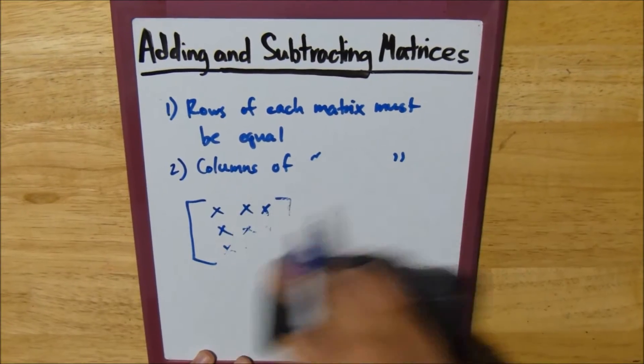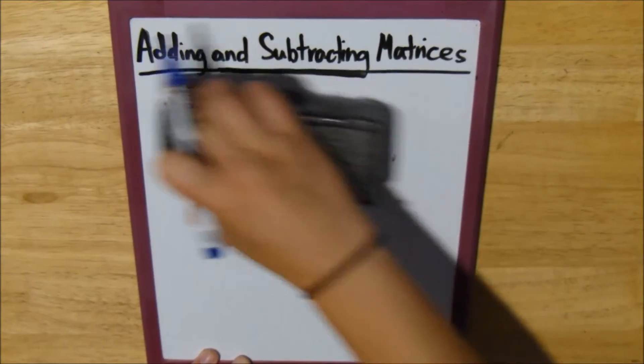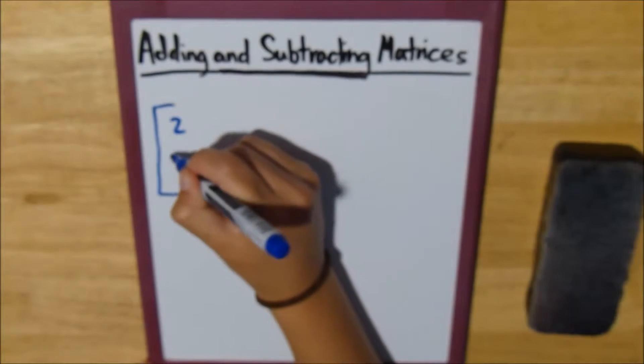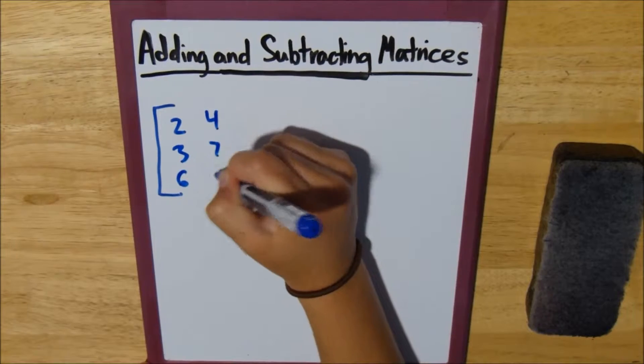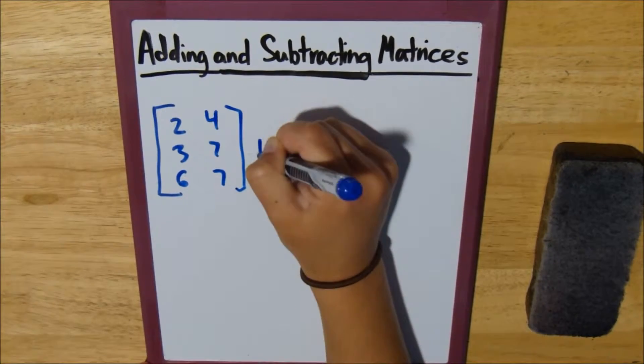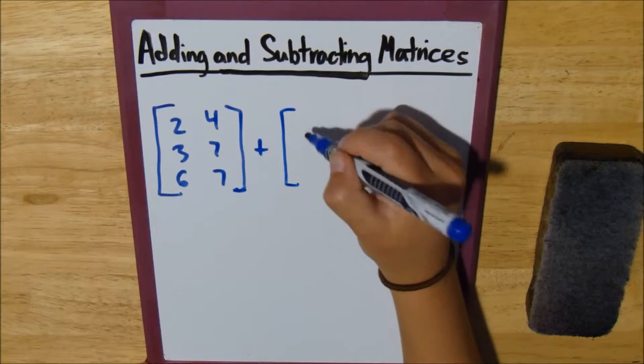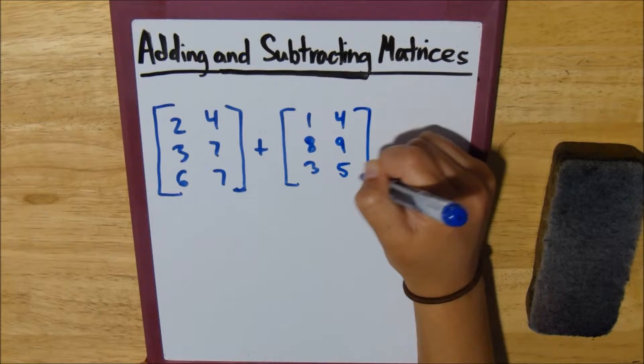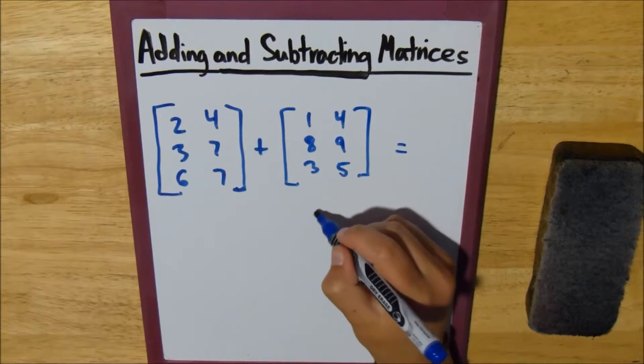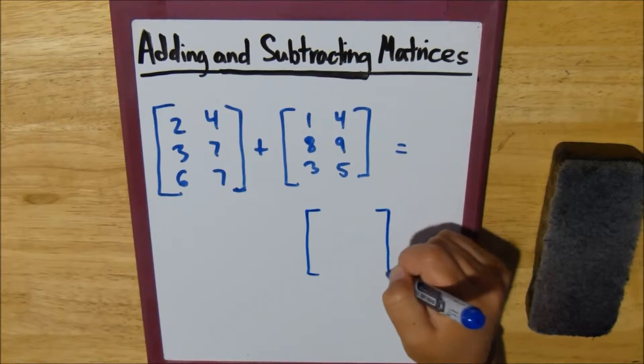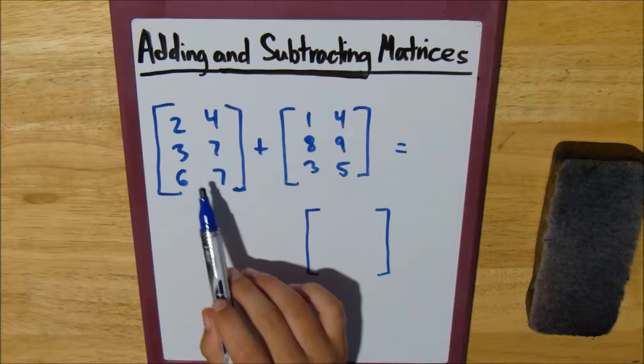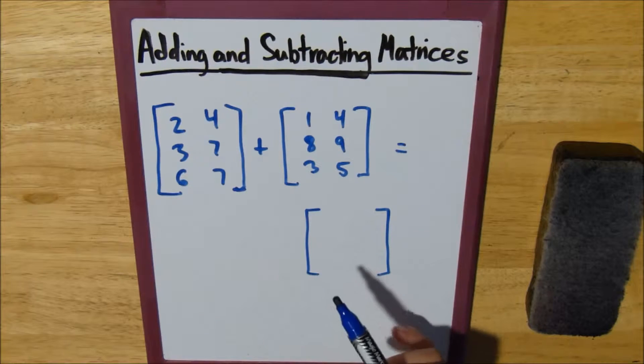Okay, so now that we've got those two rules out of the way, let's start on our example problem. Suppose we have this matrix [2, 3, 6; 4, 7, 7] plus [1, 8, 3; 4, 9, 5]. We're asked to find the resulting matrix. Now, we know that this matrix is going to be the exact same dimension as the matrices that you're adding.